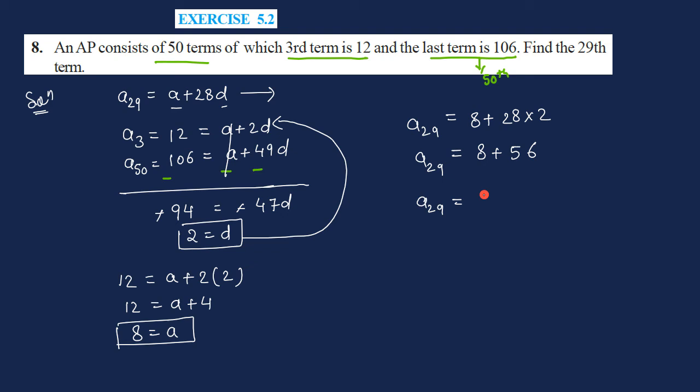So the 29th term is 8 plus 56, which equals 64. The 29th term is 64. So guys, this was the solution for question number 8. Thank you for watching, have a nice day.